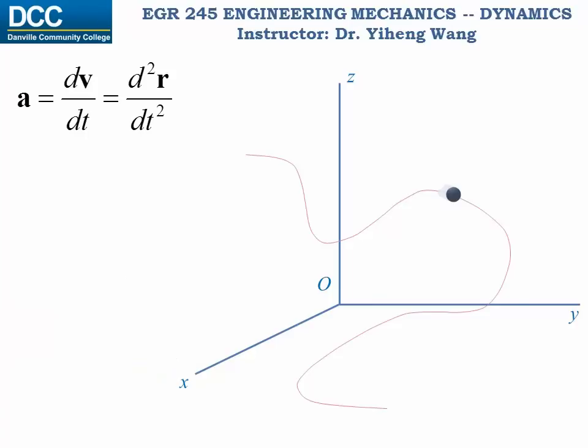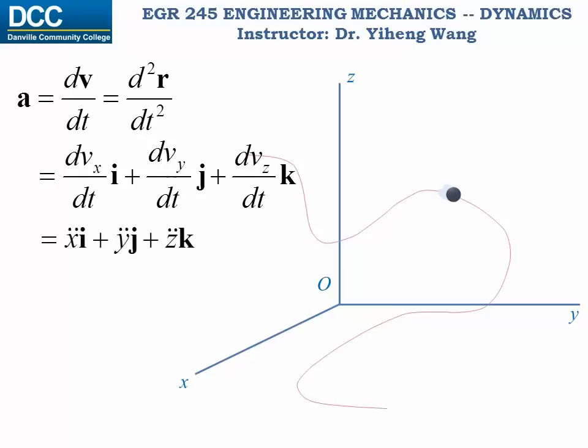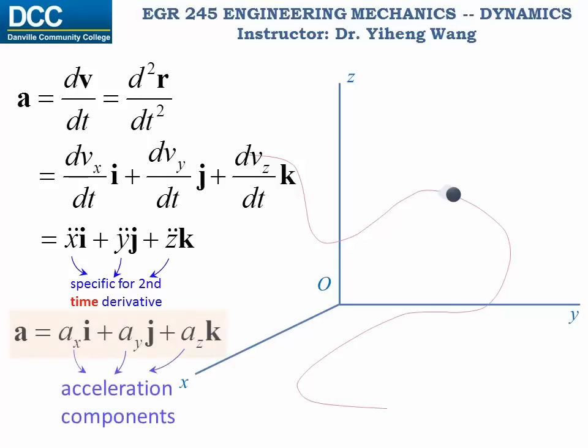Similarly, for the acceleration, which is defined as dv over dt, or the second time derivative of the position as we are already very familiar with, acceleration equals to dvx dti plus dvy dtj plus dvz dtk, or x double dot i plus y double dot j plus z double dot k. And here the double dots are specific for the second time derivative of a function.